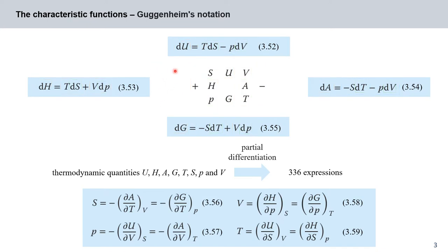Now let's look at the independent variables — temperature, pressure, entropy, and volume — that appear in these equations. The characteristic functions are total differentials, so T, P, S, and V must represent partial differential quotients. These are equations 356 to 359. We can derive these relations following the Guggenheim notation scheme: the function at one corner, for example T, results as a partial derivative of the energy function opposite to it — so for T, this would be U or H — with respect to delta S.